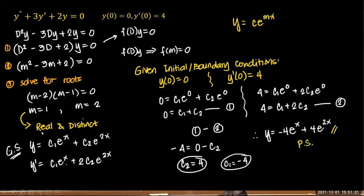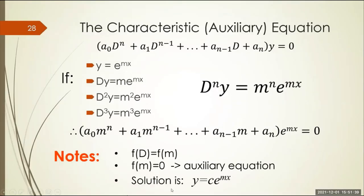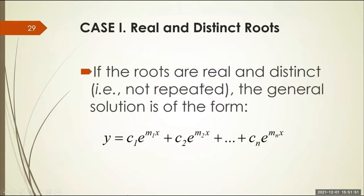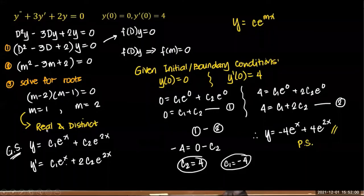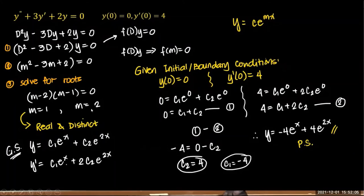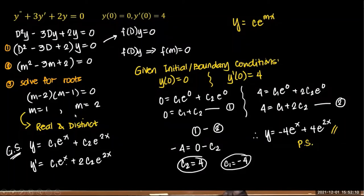Some of you might ask how we got the general solution. According to the characteristics of the auxiliary equation, the solution is in the form y equals c·e^(mx). If you have multiple roots m1 and m2, you get c1·e^(m1·x) and c2·e^(m2·x). Here we have two roots, 1 and 2, giving c1·e^x and c2·e^(2x) respectively.